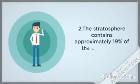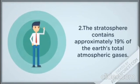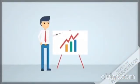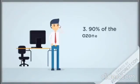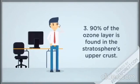The stratosphere contains approximately 19% of the Earth's total atmospheric gases. 90% of the ozone layer is found in the stratosphere's upper crust.